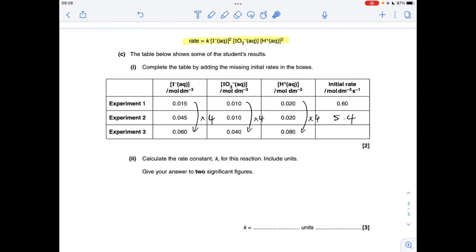And for experiment 3, you can see all three of the concentrations have actually increased by a factor of 4. So the overall increase is going to be 4 squared times 4 times another 4 squared. So that's a 1,024-fold increase. So we need to multiply that by 1,024, which gives an initial rate for experiment 3 of 614.4.